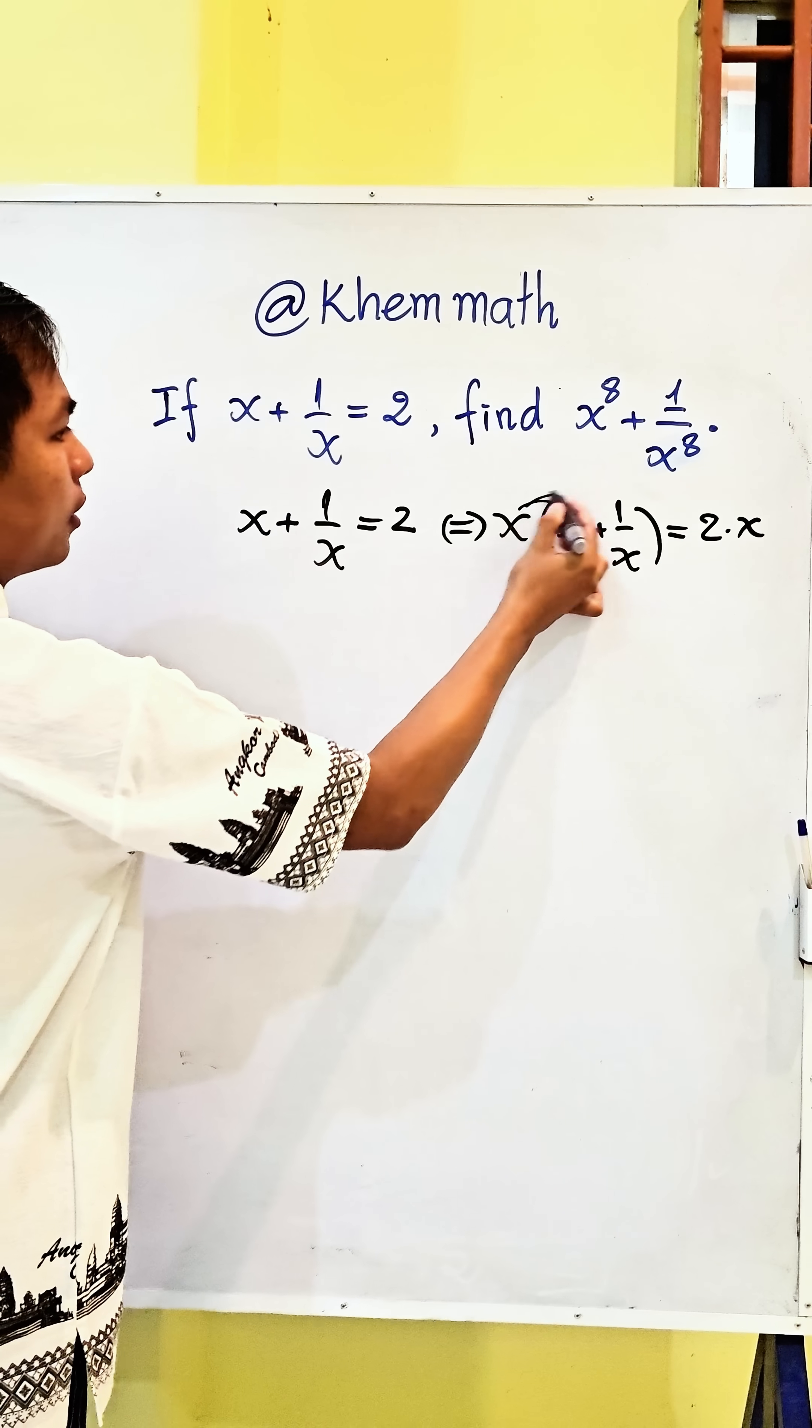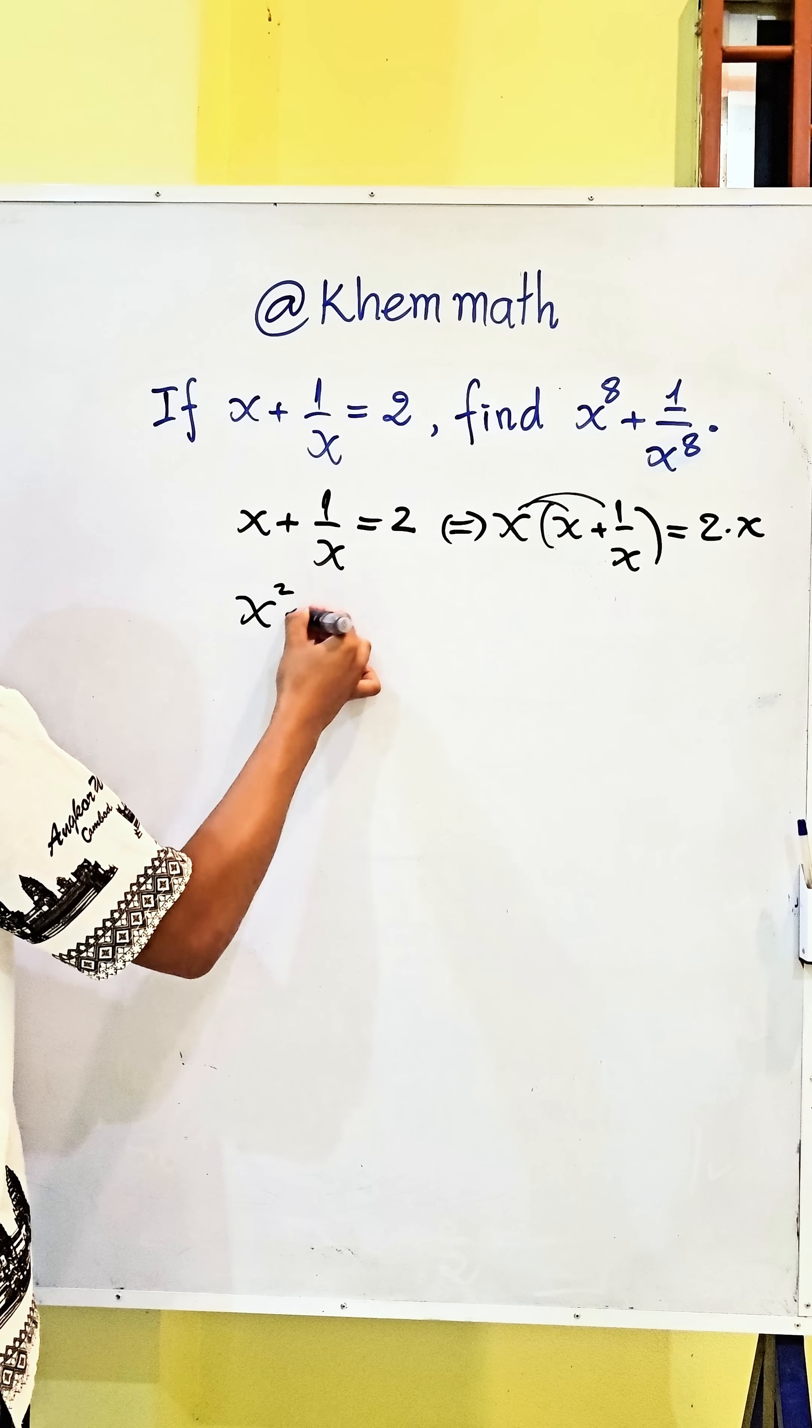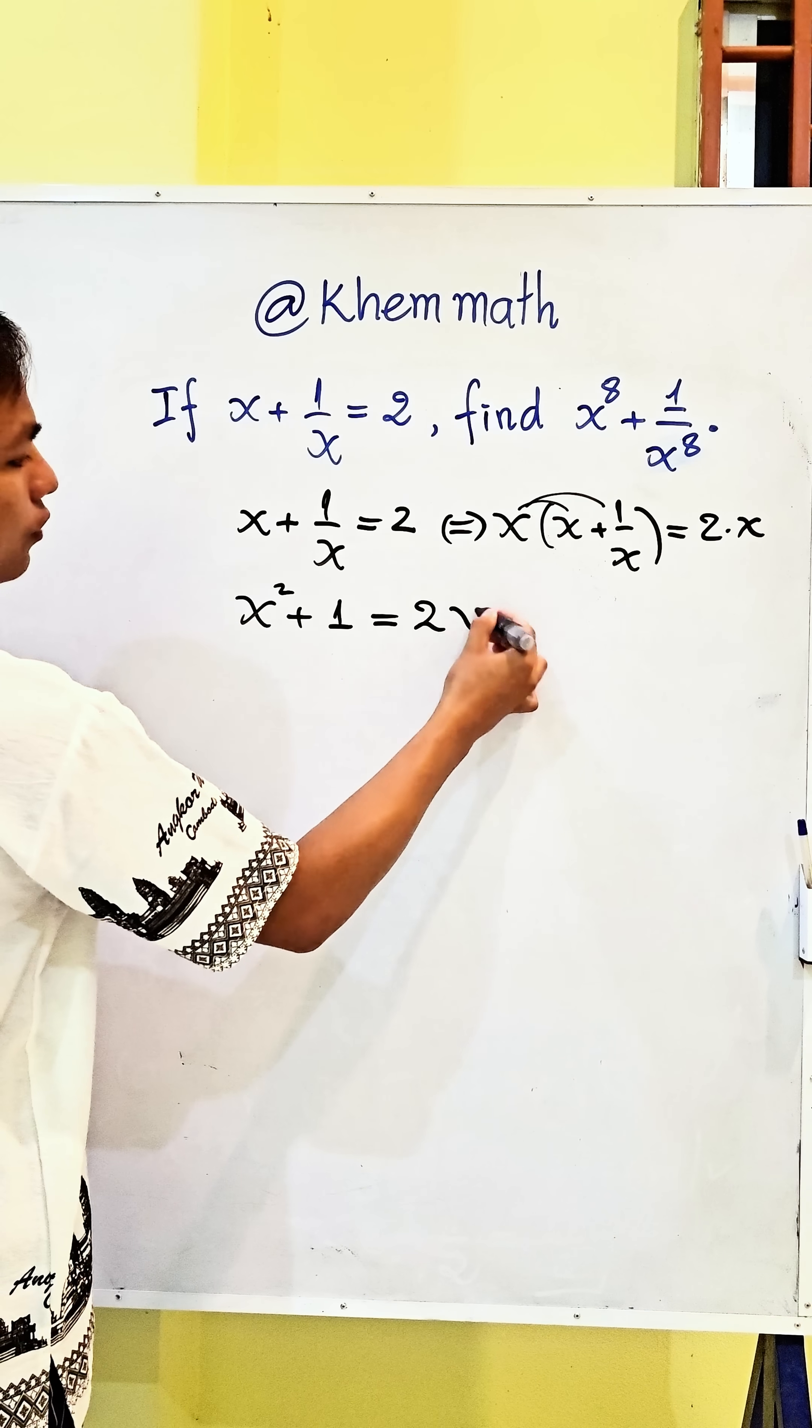And here we expand. We get x squared plus 1 equals 2x.